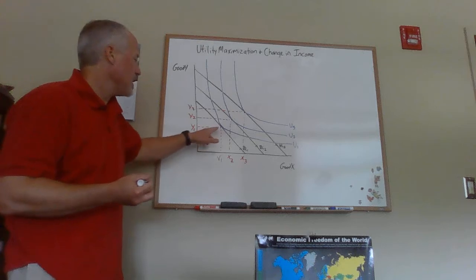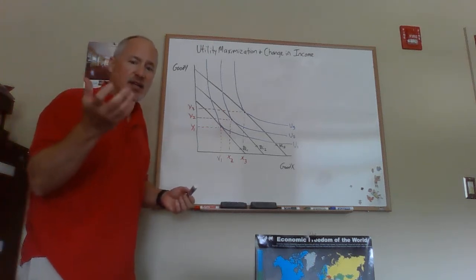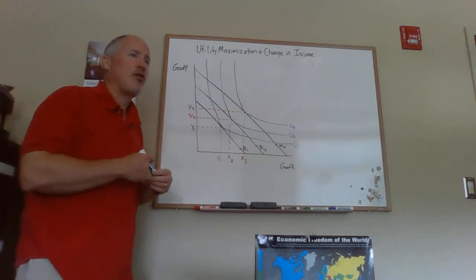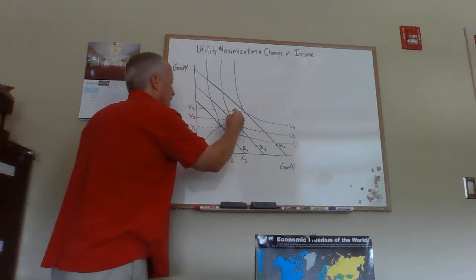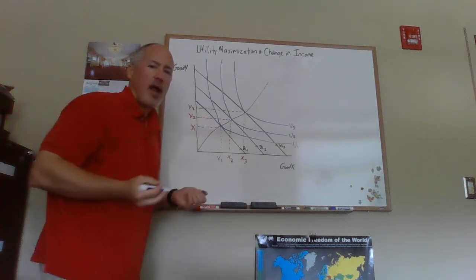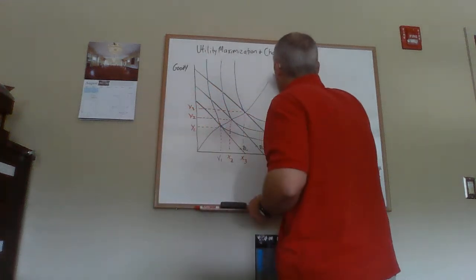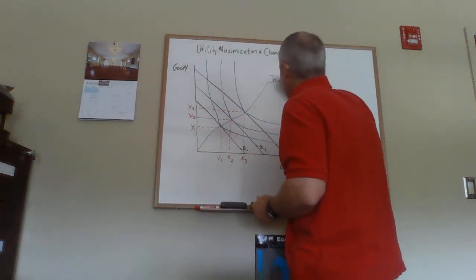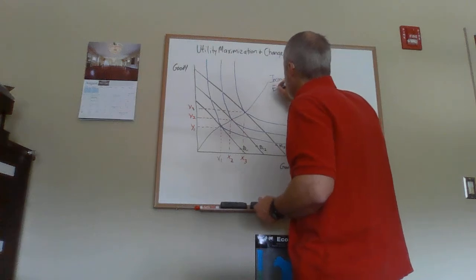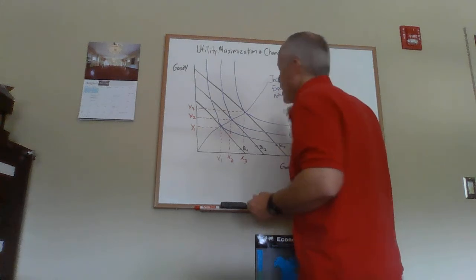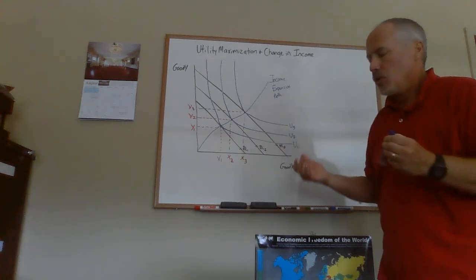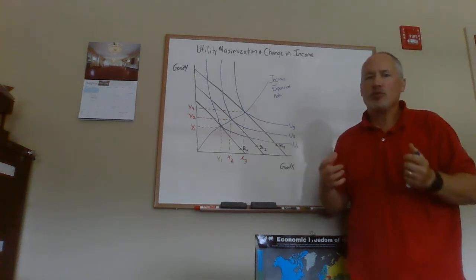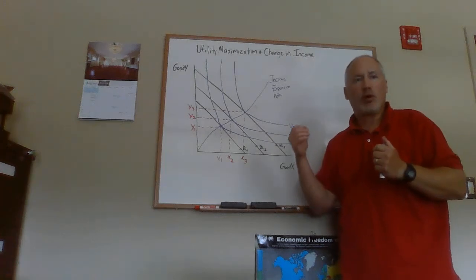We did this for three budget lines, but we could do it for dozens or hundreds. We take all those tangency points and connect them, and they form a kind of curve. This curve is then what we call the income expansion path.